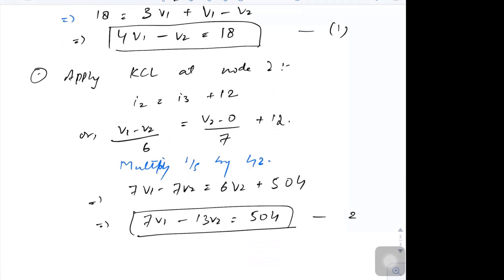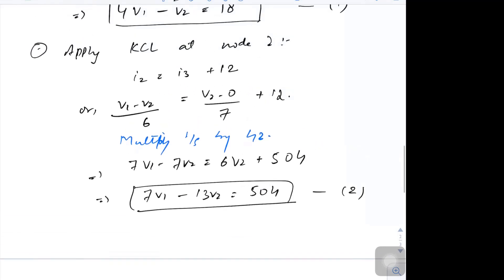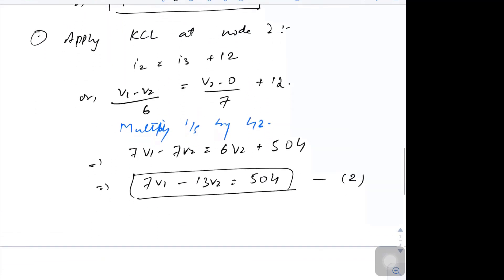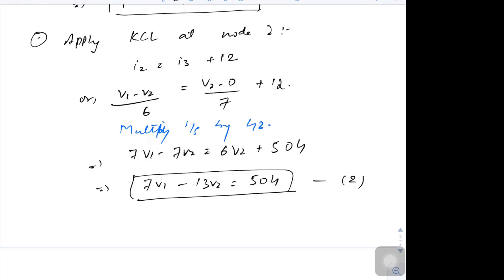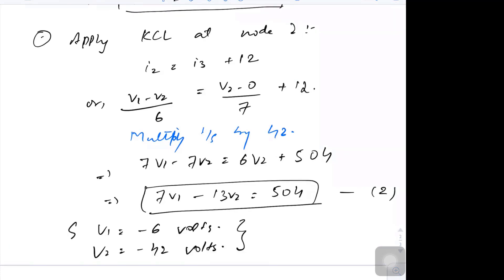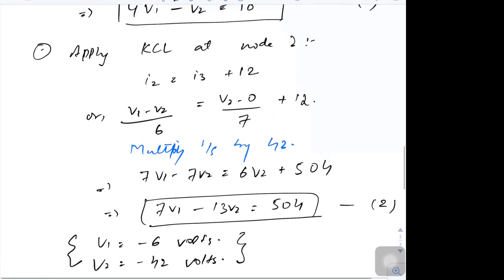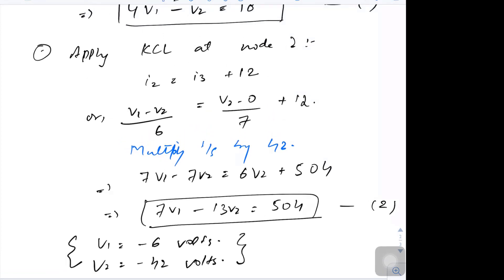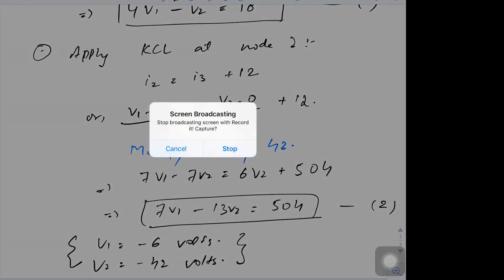Now we have two equations and two unknowns. We can use either the substitution method or the determinant method to get the values. Solving them gives V1 = −6 volts and V2 = −42 volts. Please try solving this problem yourself, and in the next video I will show you how to solve this using the determinant method, which is the faster one. Thank you all.